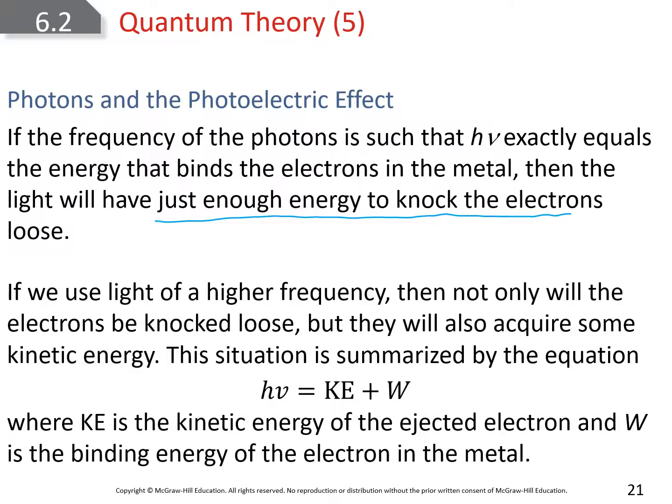When you use light of higher frequency, not only do they get knocked loose, but they also pick up some kinetic energy. These electrons have potential energy, the ability to do work. When they're in their stable base orbital where they have stable, lower energy, they can pick up some energy and transform some of that potential energy into kinetic energy, going into an excited state. We can calculate this by setting the energy of a photon equal to kinetic energy plus the amount of work.